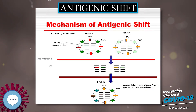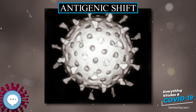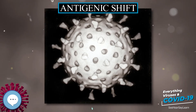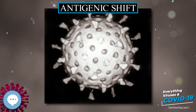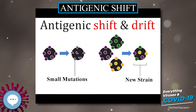Regarding the transmission of influenza viruses from non-human animals to people: influenza viruses are found in many different animals, including ducks, chickens, pigs, humans, whales, horses, and seals.